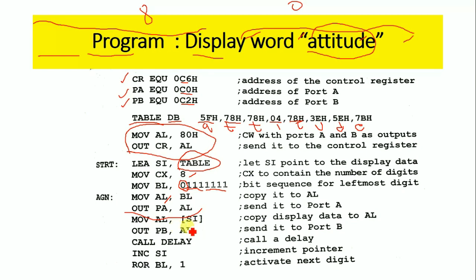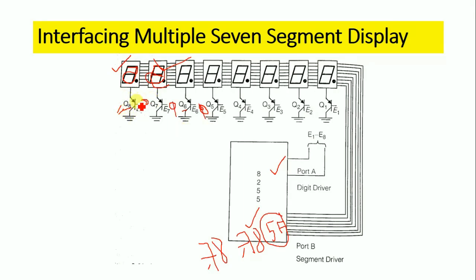After that, 'MOV AL, [SI]' moves the content at the SI address into AL. Initially SI points to the first table value, which is 5FH, so that is moved into AL. Then 'OUT PORT B, AL' sends 5FH to Port B. A delay is called, and since transistor Q8 is on, character A is displayed on the eighth seven segment display.